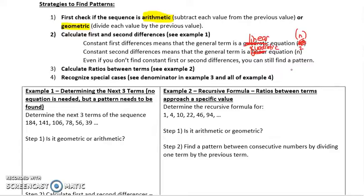Even if you don't find constant first or second differences, you can still find a pattern and continue to generate more terms. We're going to calculate ratios between the terms and see how that works. Finally, we want to recognize some special cases, specifically in regards to a denominator.